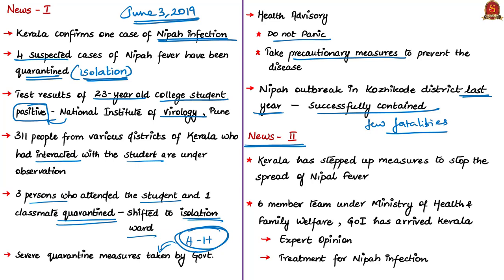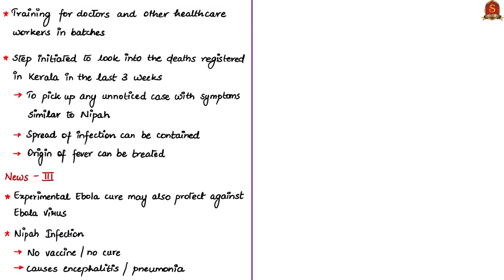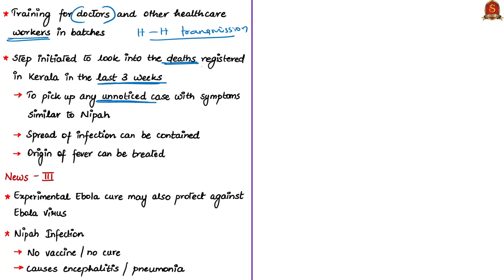The second news article tells that Kerala has started taking steps to stop the spread of the Nipah virus. A six-member team from various institutes under the Union Health Ministry was formed to provide expert opinion and treatment guidance on tackling Nipah infection. For the last two days, training has been carried out for doctors and other healthcare workers on how to proceed with treating infected persons. Steps were also made to review deaths registered in Kerala during the last three weeks to identify any unnoticed or unreported Nipah infections.